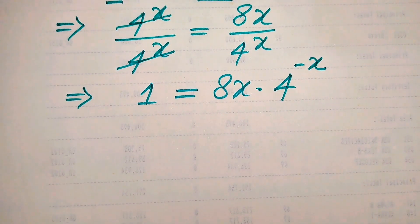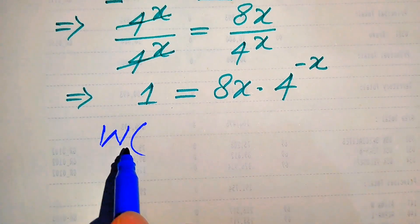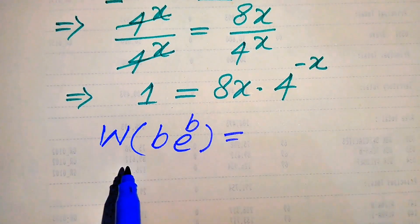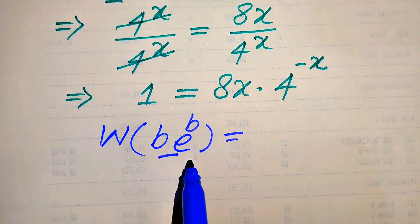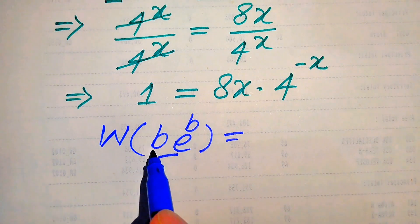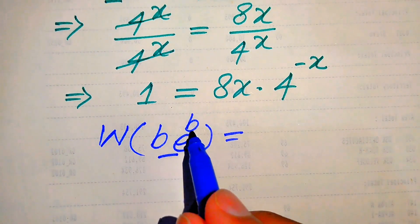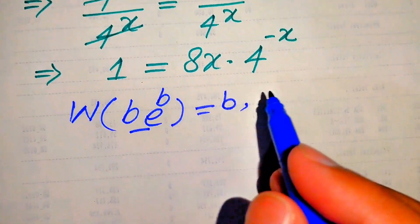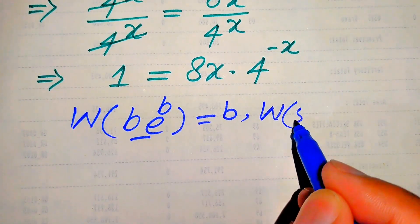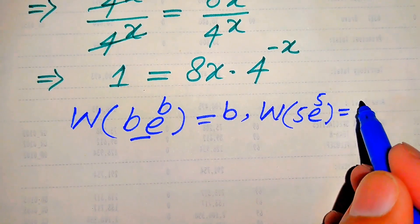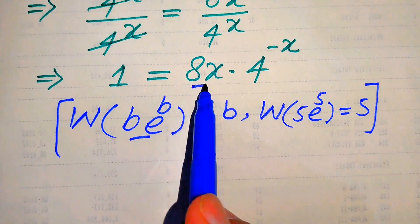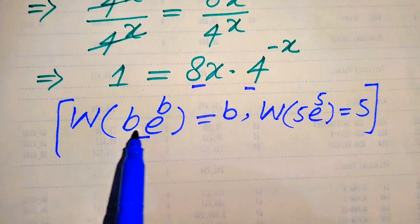We further solve this problem with the help of the Lambert W function. The Lambert W function is applied to functions of the form b · e^b. You can apply the Lambert W function to this type of expression — one exponential function with base e whose exponent is multiplied by some factor — and the output is the exponent of e, which is b. For example, W(5 · e^5) = 5. To apply the W function, we first need to convert our equation into this form.